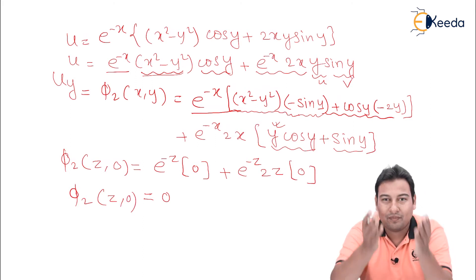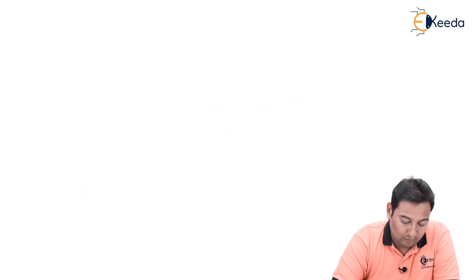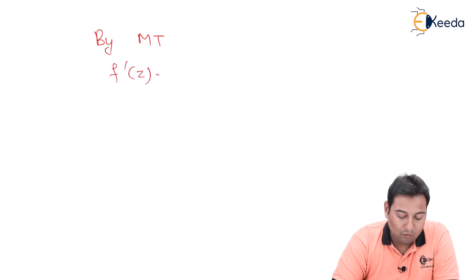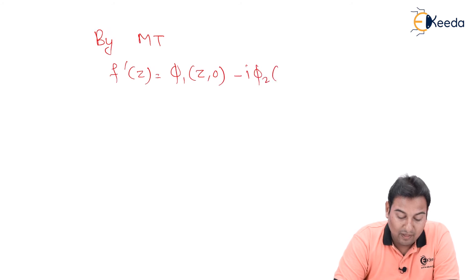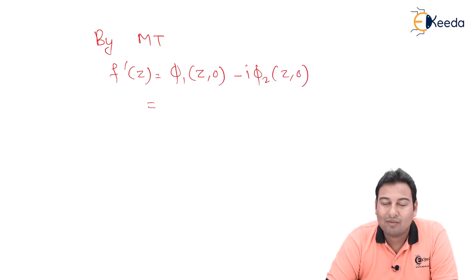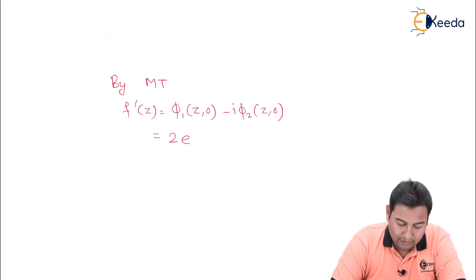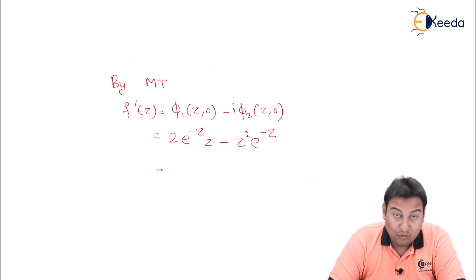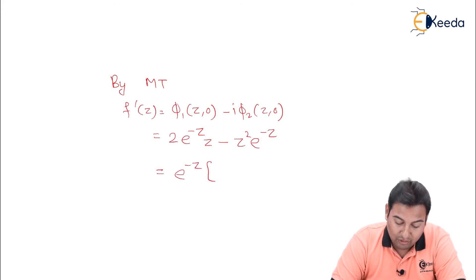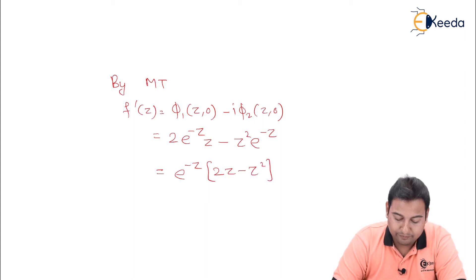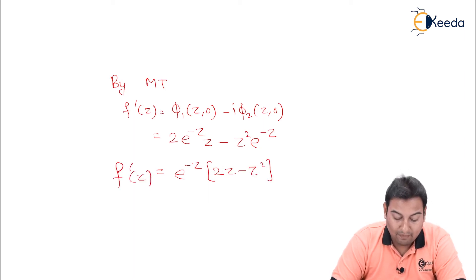By the Milne-Thompson method, f dash of z is equal to φ₁(z, 0) minus i times φ₂(z, 0). Here φ₂(z, 0) is already 0, so we just need φ₁(z, 0). That is 2 e raised to minus z times z, minus z squared e raised to minus z. Taking e raised to minus z common, we get f dash z equals e raised to minus z times (2z minus z squared). This is the value of f dash of z.